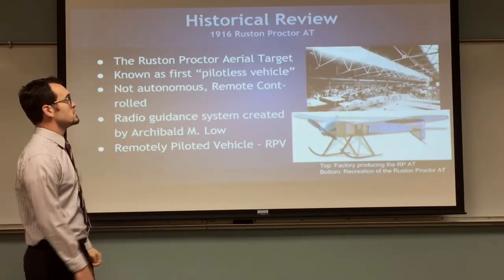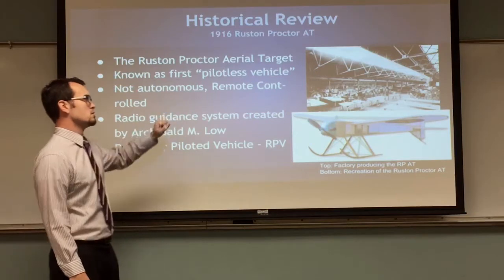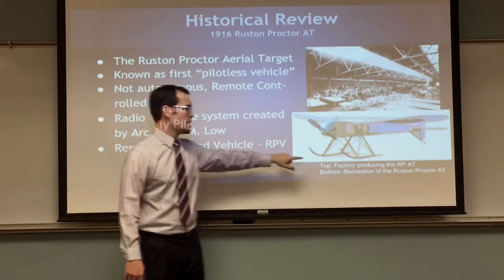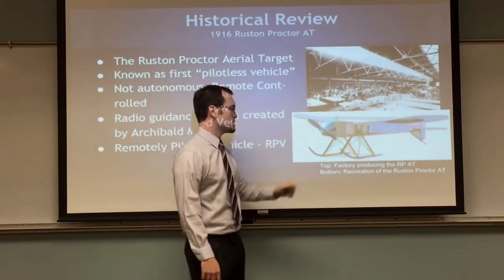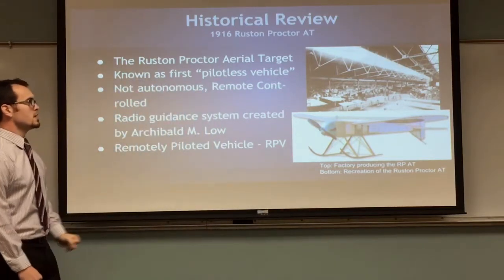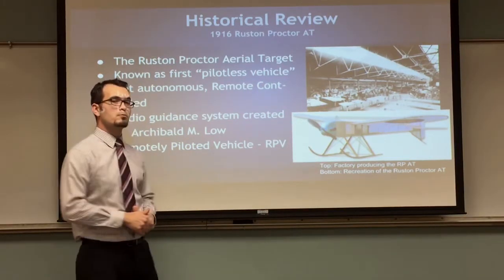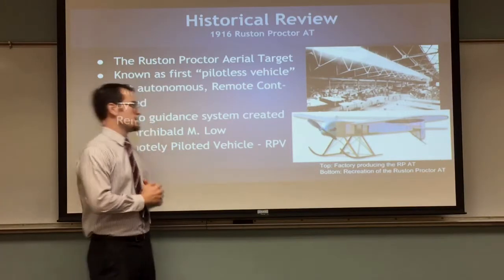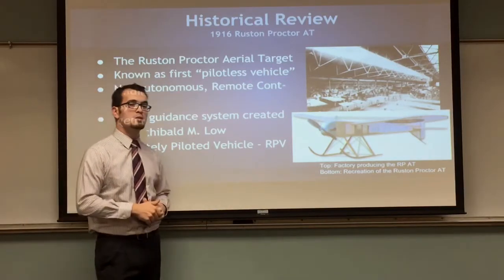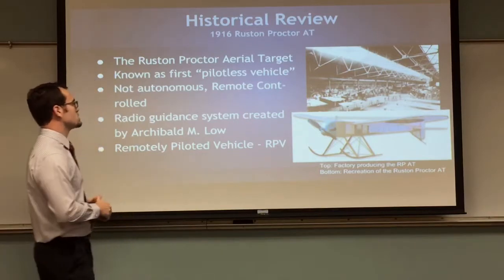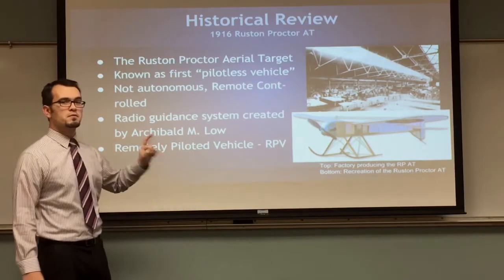In 1916, we see the Ruston Proctor AT, or the aerial target — the first known pilotless vehicle. This is a picture of them being mass produced in a factory, and a reimagined concept of how it looked. The most revolutionary part is that it was remote controlled, though not yet autonomous. It was achieved by Archibald M. Lowe, an English engineer, who was able to control the AT with radio signals. This branched into a different area we also call remotely piloted vehicles, or RPVs.